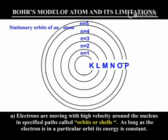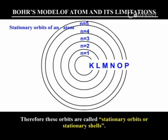Electrons are moving with high velocity around the nucleus in specified paths called orbits or shells. As long as the electron is in a particular orbit, its energy is constant. Therefore, these orbits are called stationary orbits or stationary shells.